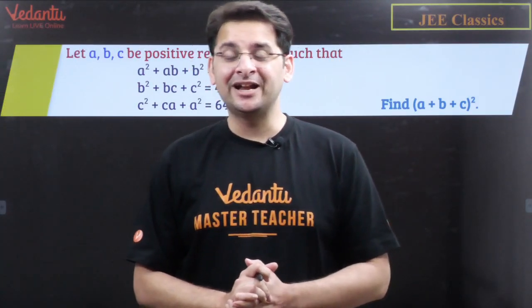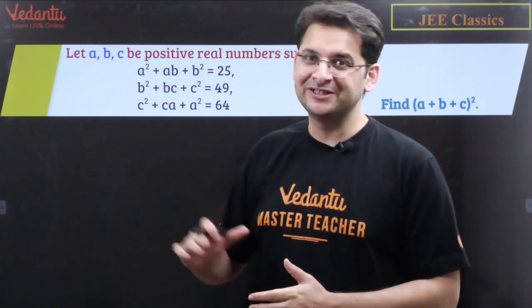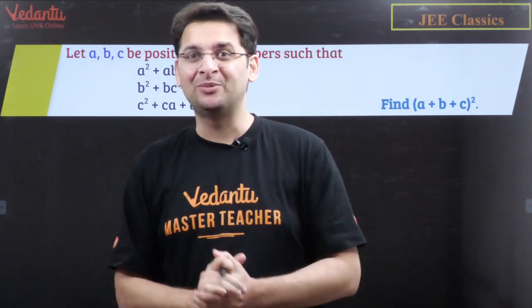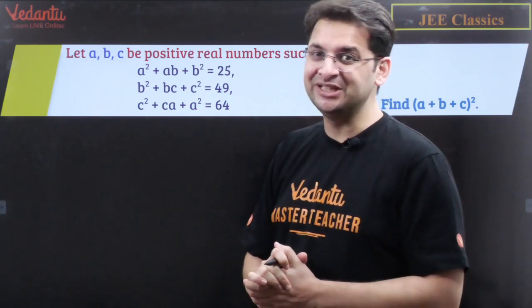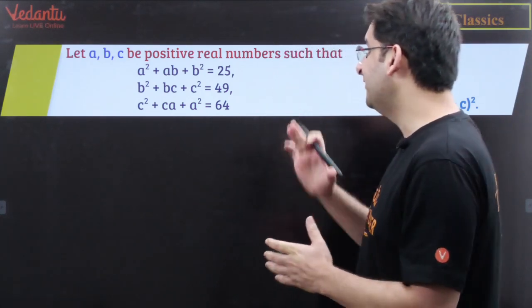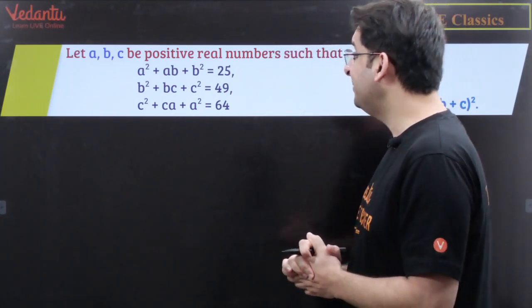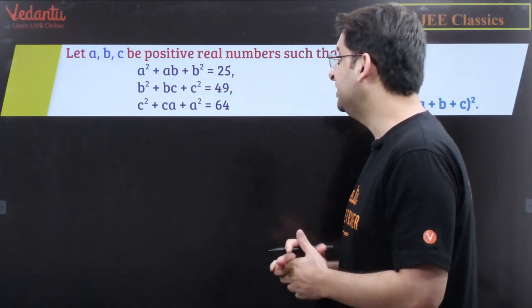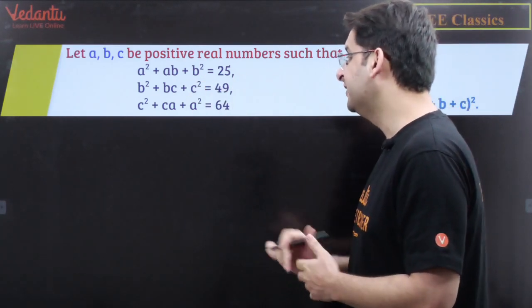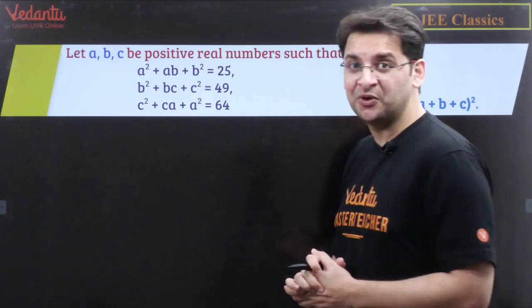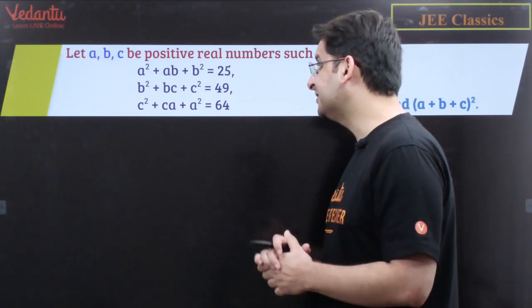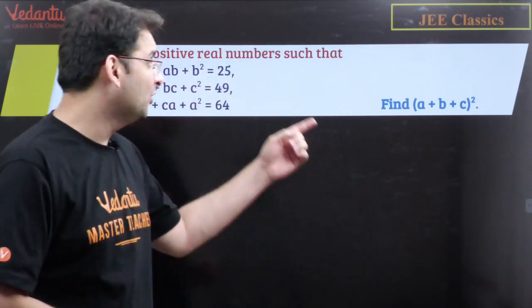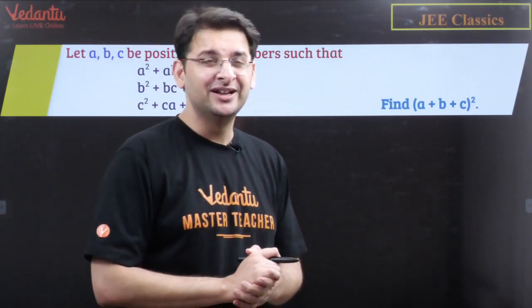Hi all, this is Abhay Mahajan and I welcome you all to this series called JEE Classics, wherein we discuss some classic problems of and related to JEE. This is one very good problem: A, B, C are positive real numbers such that A²+AB+B²=25, B²+BC+C²=49, and C²+CA+A²=64. We need to find the value of (A+B+C)².